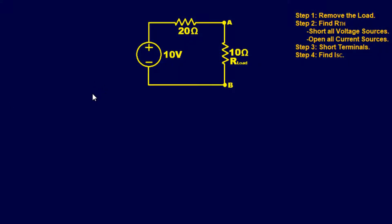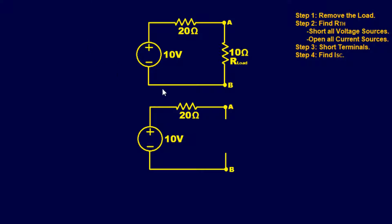For this exercise we're going to start with a relatively easy problem. This problem has one voltage source and two resistors, and we're going to find the Norton equivalent of this particular circuit. Step one: remove the load — so all we did was remove our resistive load. Step one complete. Step two: find the Norton resistance.